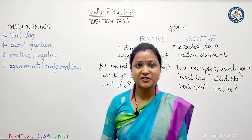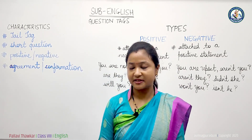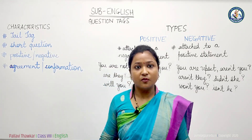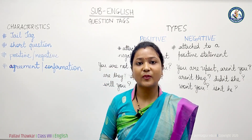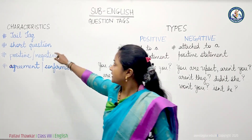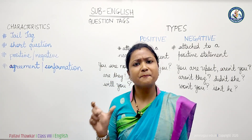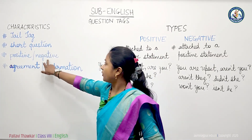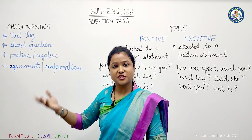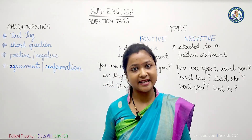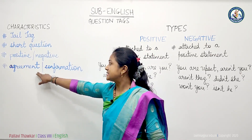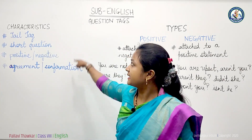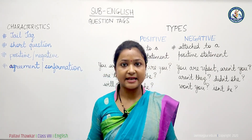Before understanding the question tag, let us see the characteristics of it. A question tag is a tail tag — it is also known as a tail tag. Secondly, it's a short or mini-question added at the end of a statement. It can be positive or negative in nature. And lastly, it is an agreement or confirmation one expects from another person. Understanding these four characteristics, let's take an example.